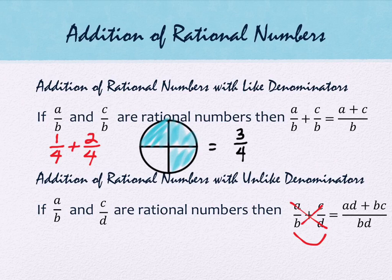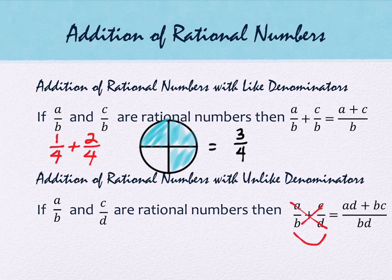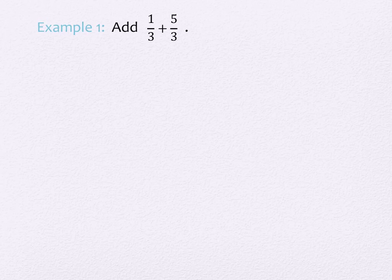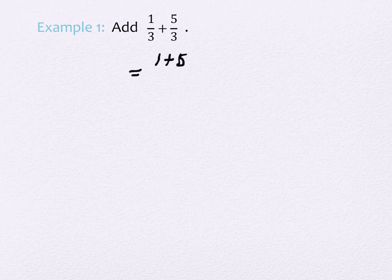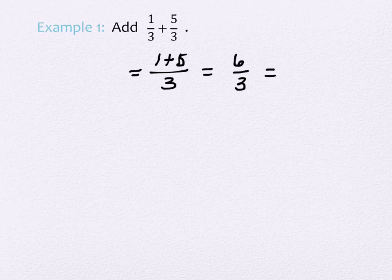So this is unlike denominators. You might ask yourself, would it also work on like denominators? Yes, it will work just fine with like denominators — you'll just end up with more reducing in the end. So let's do an example: we have 1 over 3 plus 5 over 3. We add the numerators: 1 plus 5 over 3 gives me 6 over 3, and reducing that gives me 2.